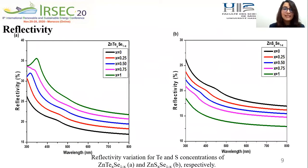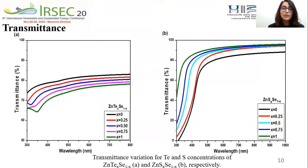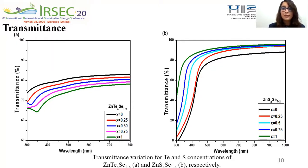For ZnTe-Se, the reflectivity increases from 18% to 25%, while for ZnS-Se, the reflectivity decreases from 18% to 13% in the visible spectrum. For ZnTe-Se, the transmittance decreases from 80% to 72%, but for ZnS-Se, the transmittance increases from 80% to 92% in the visible region.